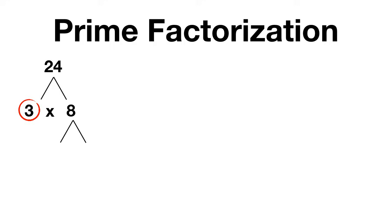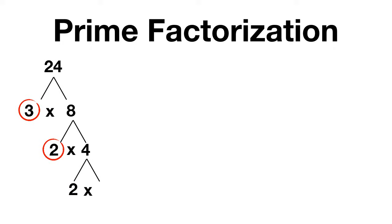8 can be split into the factors of 2 times 4. Now 2 is a prime number, so we'll leave that one, but 4 can be split up again. 4 can be split into the factors of 2 times 2. Now both of these 2s are prime numbers, so we'll stop here.